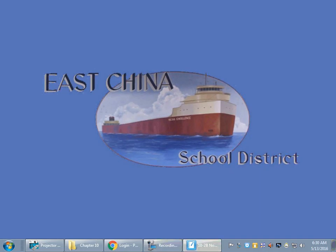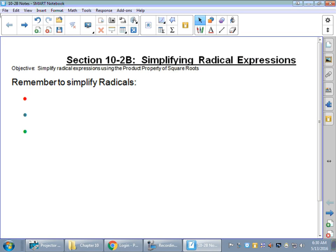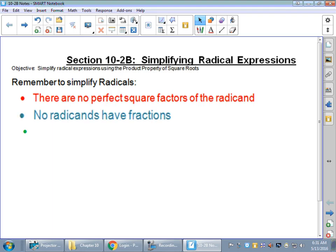Alright everybody, here we go with Section 10-2B. Section 10-2B is more simplifying radicals. Remember these three things we talked about: no perfect square factors of the radicand, no radicands have fractions, and there's no radicals in the denominator. We'll talk about the fractions in the denominator issue in 10-2C.